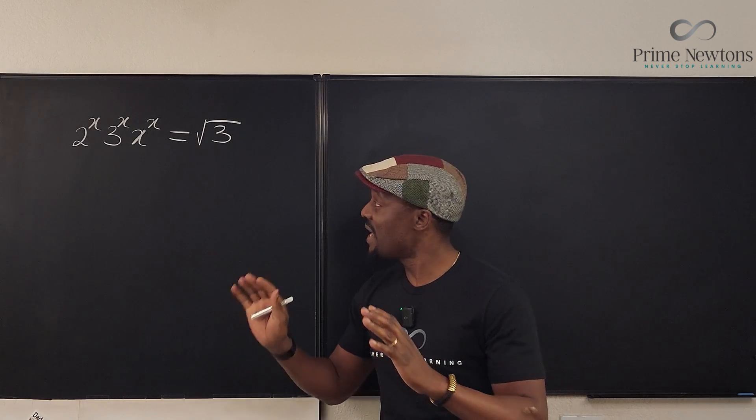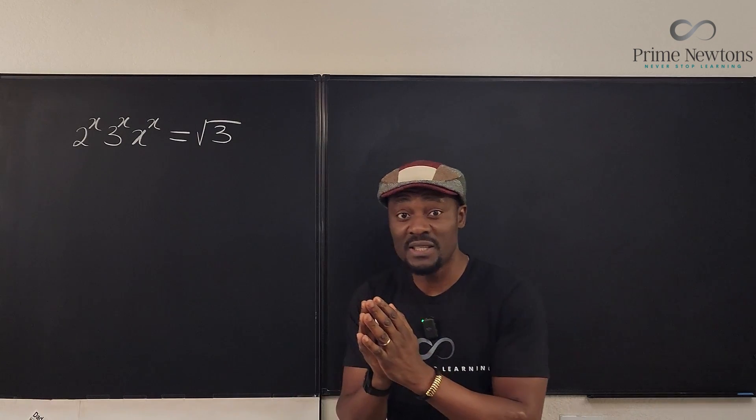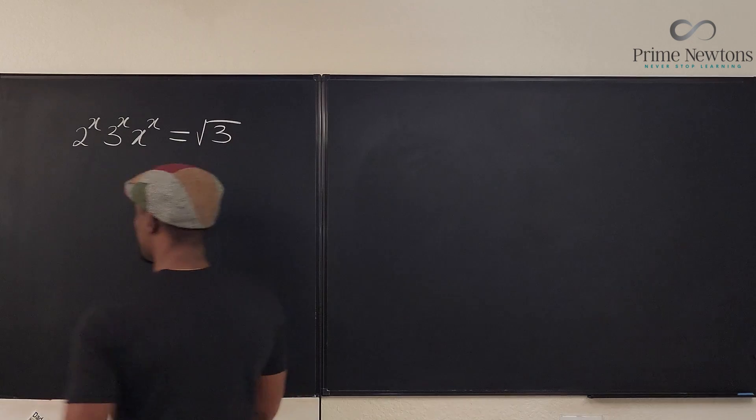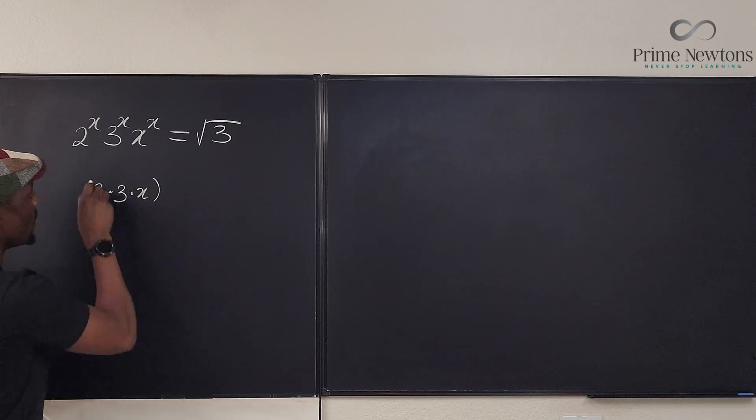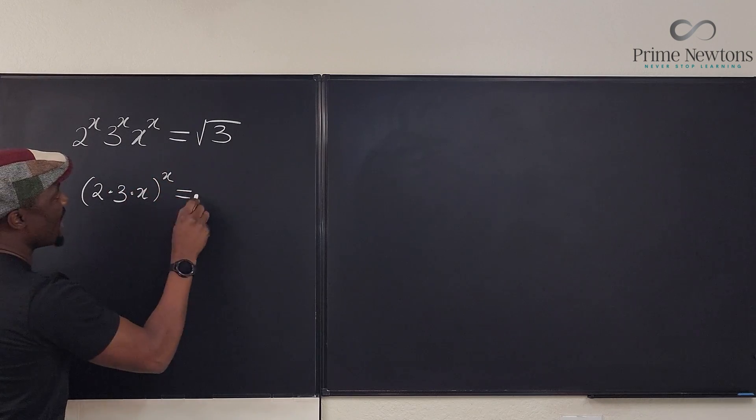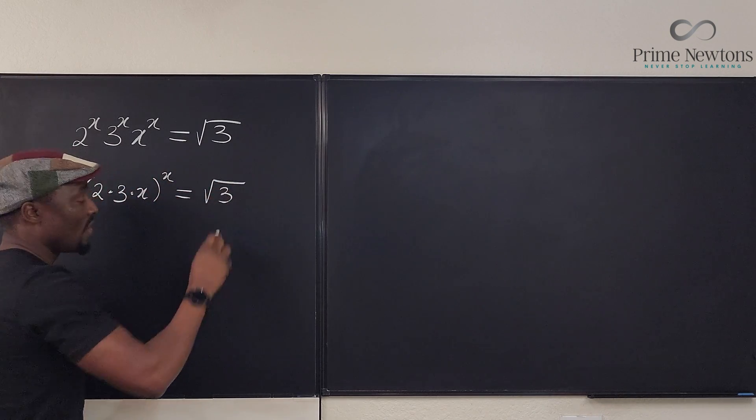So the first thing we're going to do is put all the bases together as a product. So we're going to say that this is the same thing as 2 times 3 times x all raised to power x. And we still get the square root of 3 on the right hand side.